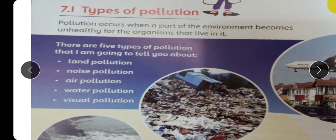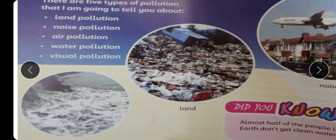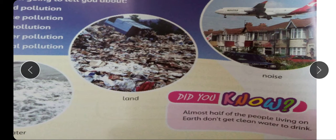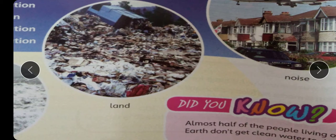There are five types of pollution. Number one: Land pollution. Noise pollution. Air pollution. Water pollution. And Visual pollution. Land ka matlab hai zameen ka kharab ho jana. Noise — shor — yeh bhi pollution hai. Visual pollution ka matlab jo cheezein gandi nazar aati hain, hamara jo view hai wo hamein bura lagta hai, to hum usko visual pollution kehte hain. Almost half of the people living on Earth don't get clean water — duniya mein taqreeban 50% aise log hain jinko peene ka saaf pani nahi milta.